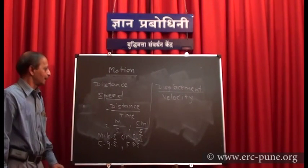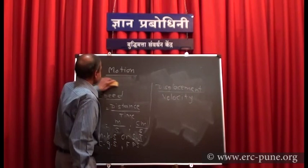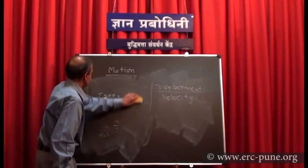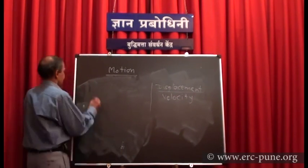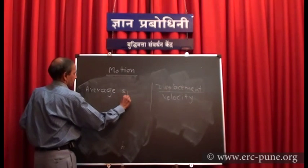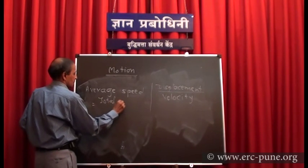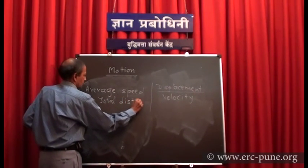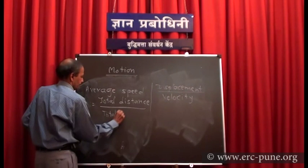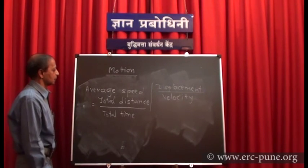So that is about speed. Now, average speed is equal to total distance traveled divided by total time taken.